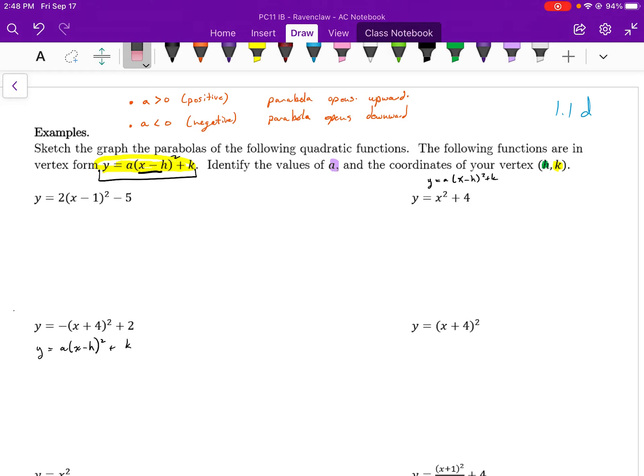The following functions are in vertex form, which is y equals a, open brackets, x minus h, closed brackets, squared, plus k, what you see highlighted in yellow. We're going to identify the values of a and the coordinates of the vertex, and the vertex will have coordinates h, k.